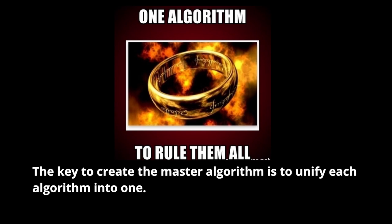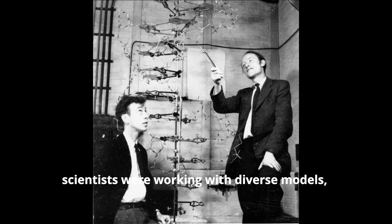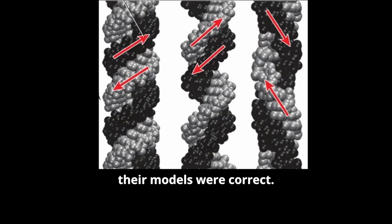The key to creating a master algorithm is to unify each algorithm into one. Before the discovery of the double helix, scientists were working on diverse models. The models were correct.